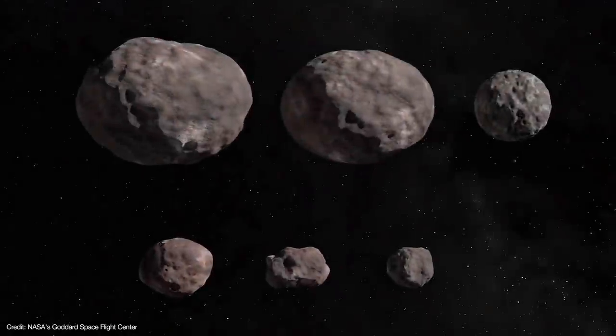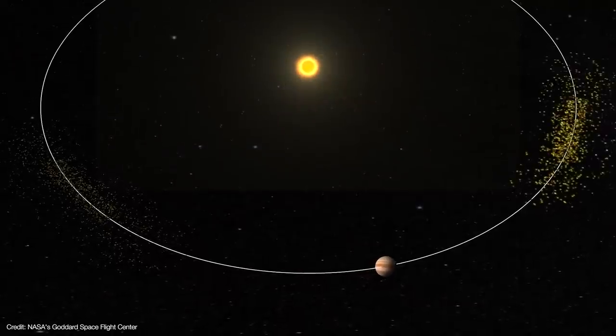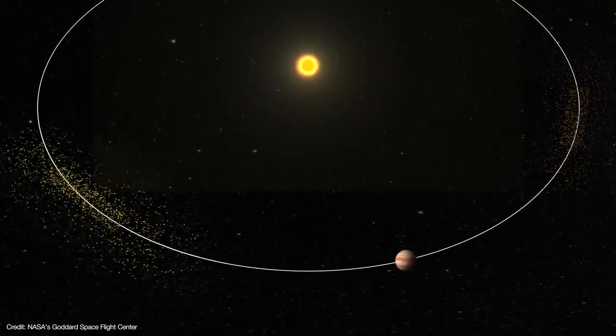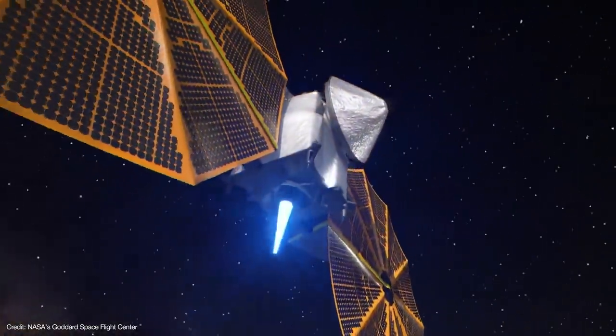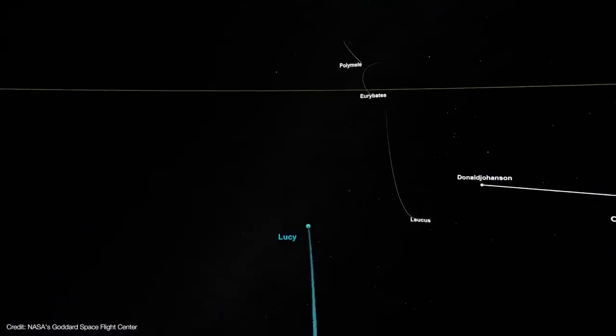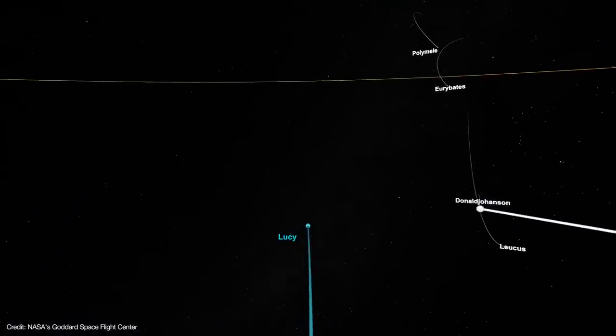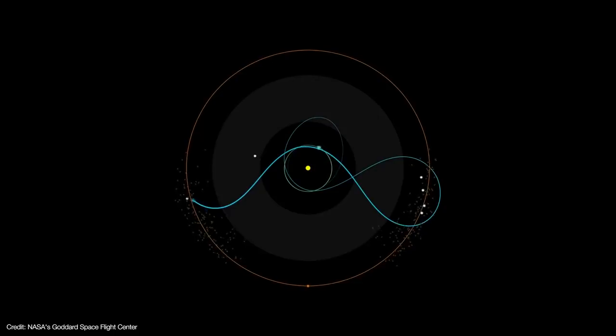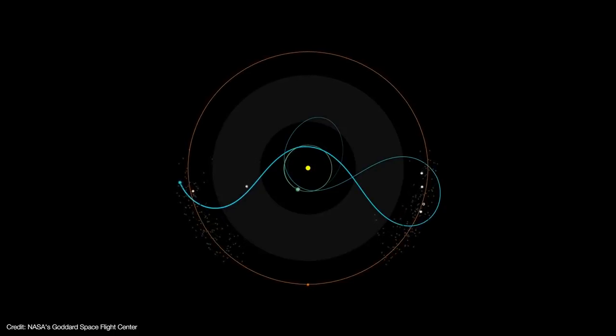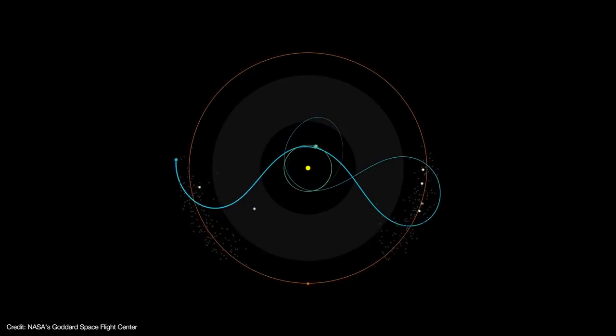To that end, Lucy will fly past seven of the Trojan asteroids, which are trapped in Jupiter's Lagrange points. Along its way out to the Trojans, Lucy will pass a small asteroid in the main belt between Mars and Jupiter. That makes for a mission total of eight asteroid flybys, more than any spacecraft has attempted before.